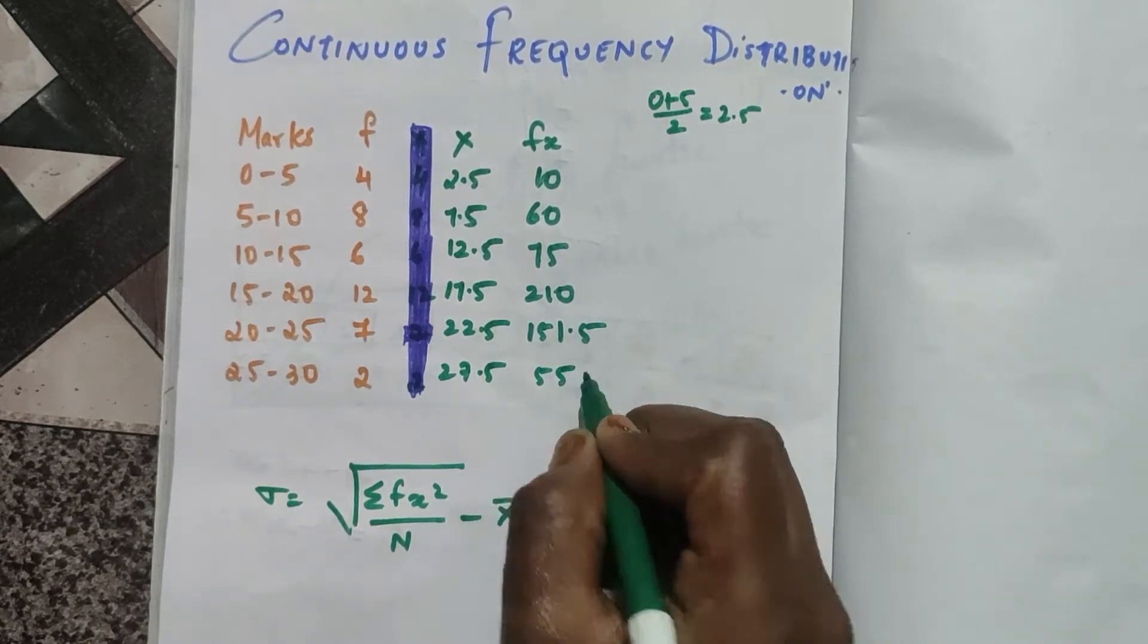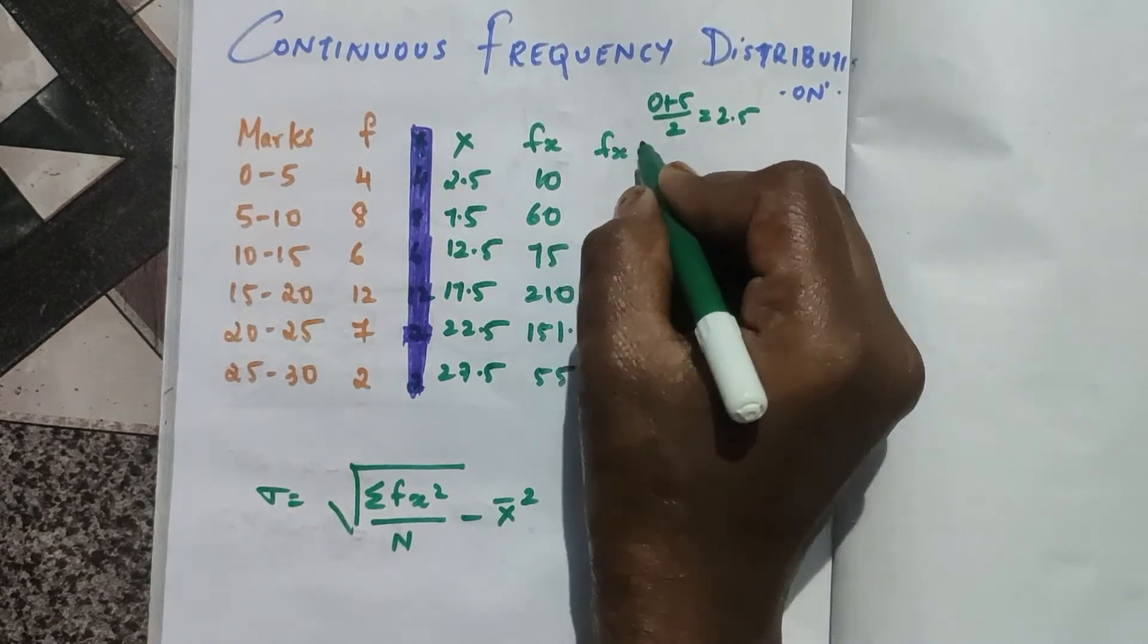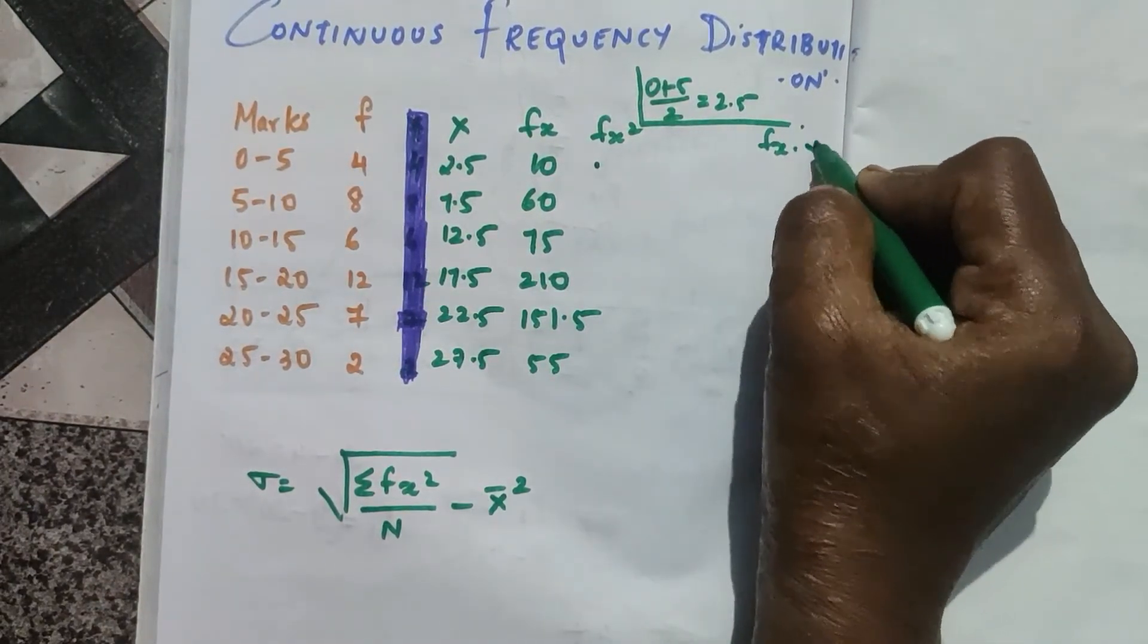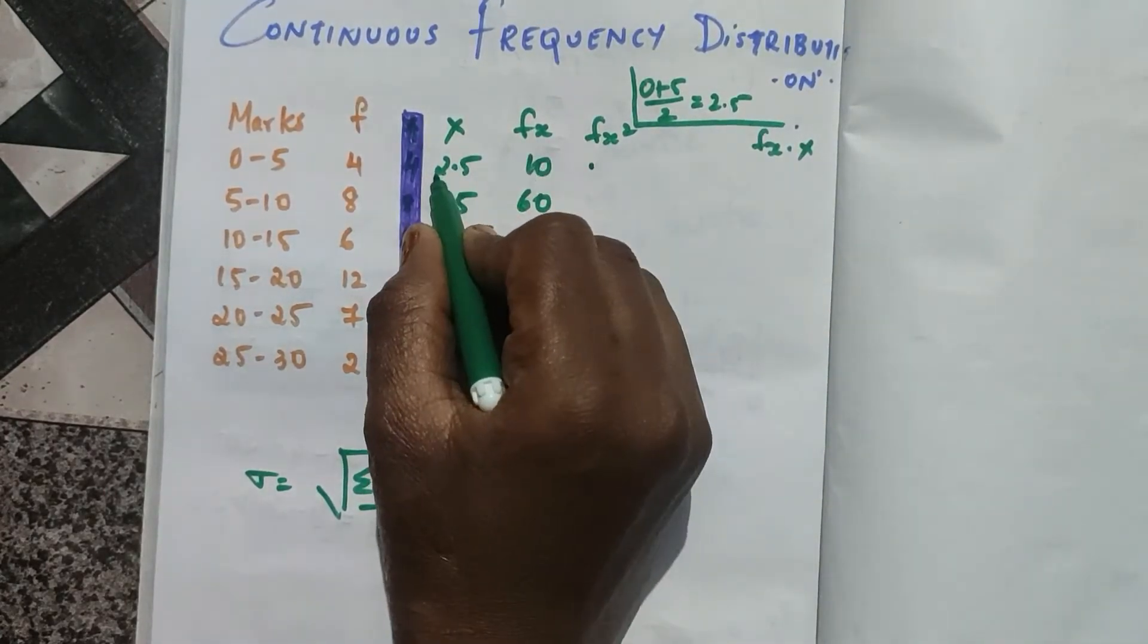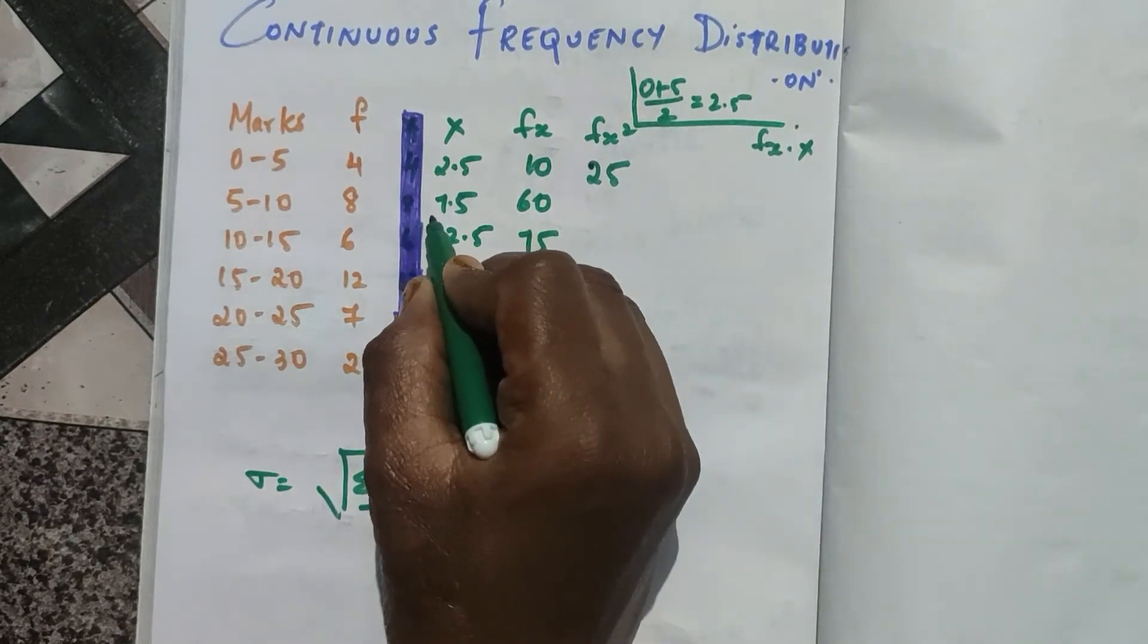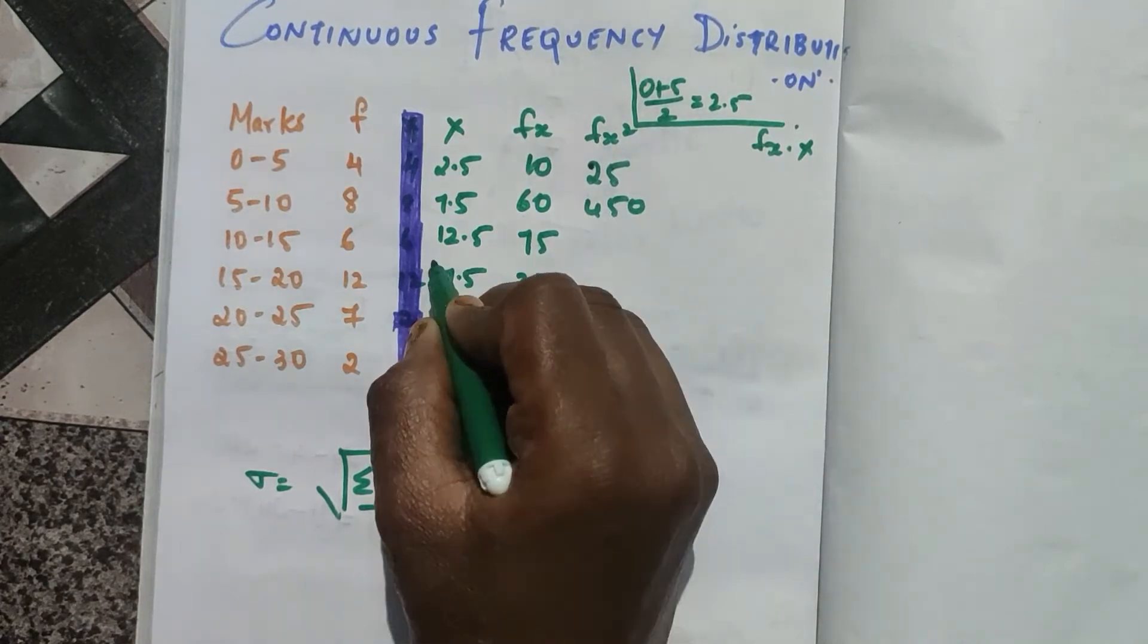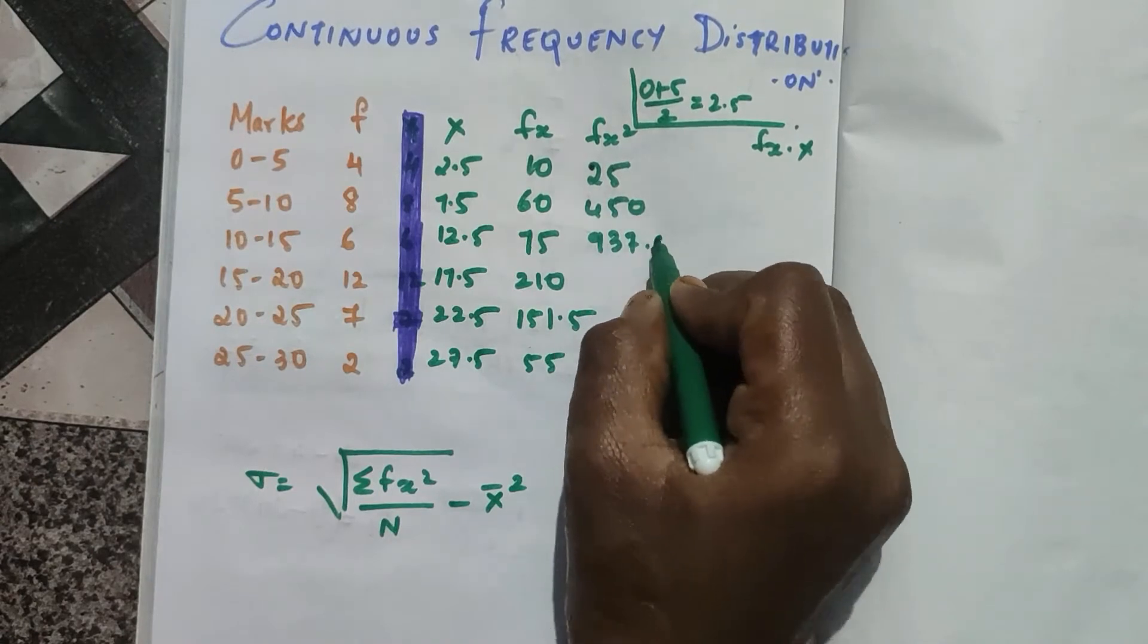After finding fx, you need to find fx square. So now you take this fx value and multiply with the x value. So you get twenty five. Now sixty into seven point five is four fifty. Seventy five into twelve point five is nine thirty seven point five.